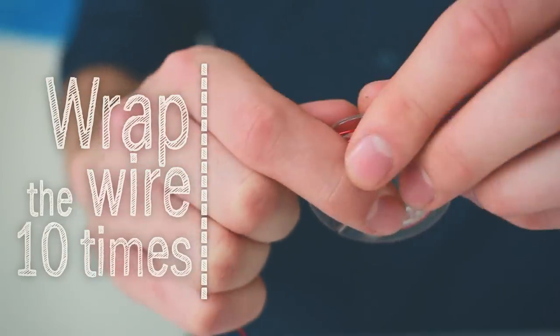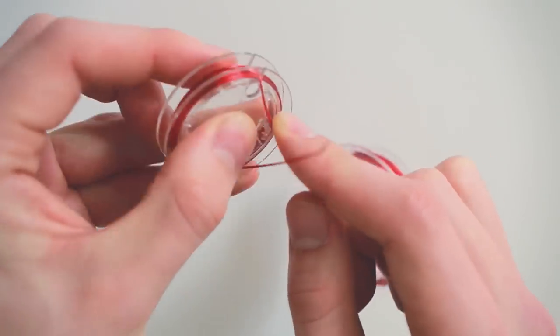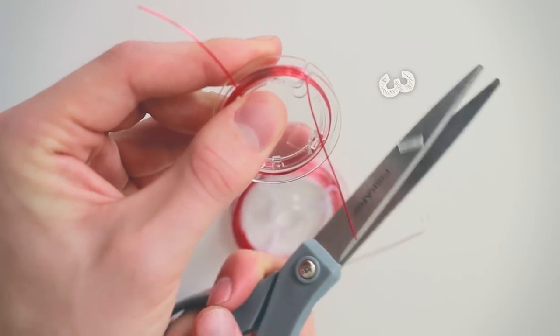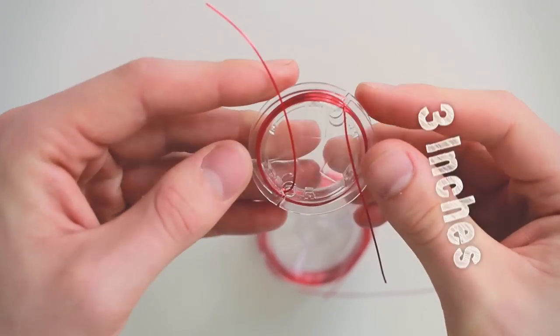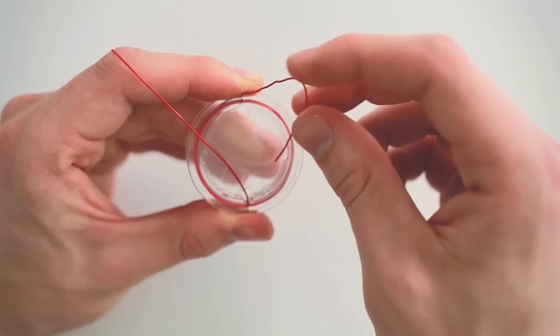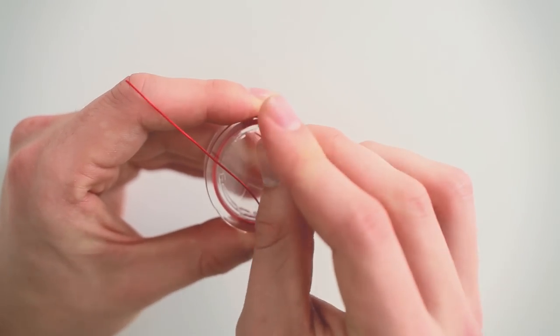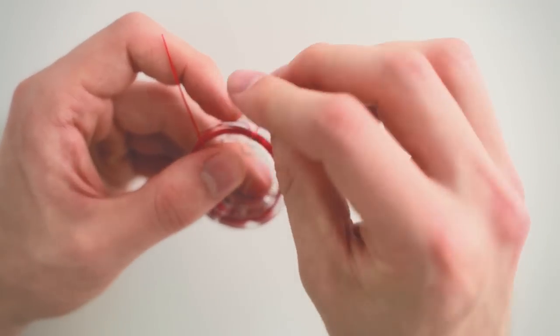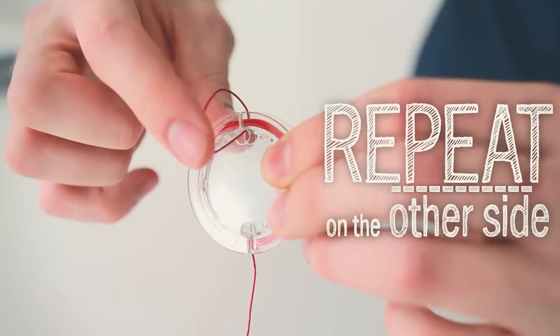Wrap the wire ten times around the spool and then take your wire and notch it on the other side of the spool. Then use your scissors to cut the wire leaving at least three inches sticking out. Push one end of the wire through the circular hole then pull it tight on the other side. Do this one more time and then repeat on the other side.